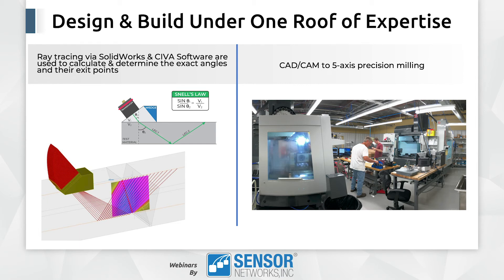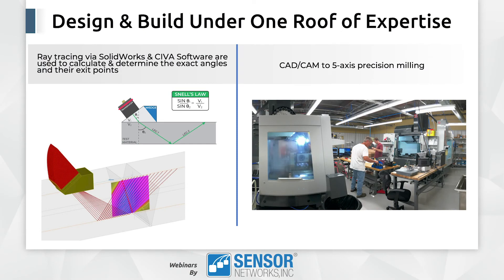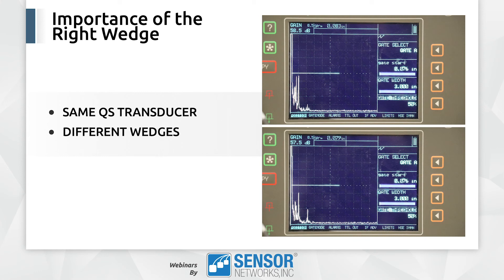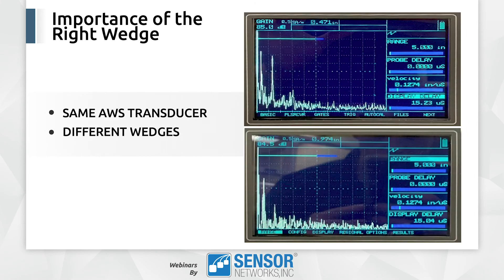Probably the biggest thing we do at Sensor Networks is that we are very vertically integrated when it comes to wedge manufacturing. All the design and all the manufacturing are done here in the facility under one roof. We use SolidWorks and CIVA to do the design and modeling of complex wedges, both mechanically and acoustically, and we use 5-axis CNC CAD-CAM milling machines to produce those wedges. Through our latest design of both mechanical and acoustic damping materials, on average we've been able to achieve anywhere from 3 to 6 dB better signal-to-noise ratio than our competitors. The next two slides will show our quick-change wedge design for angle beam inspection and our AWS wedge for weld inspection compared to our competitors.